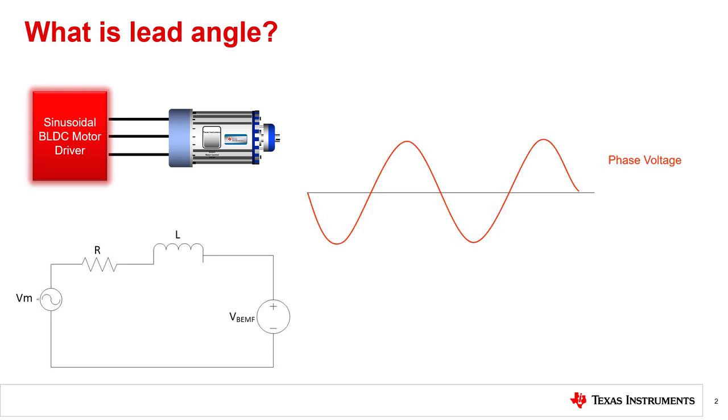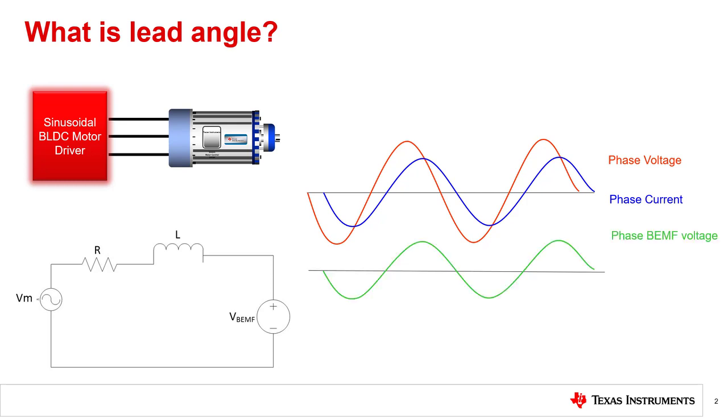Phase current of the motor lags the phase voltage because of the inductance of the motor. To achieve optimal efficiency, the phase voltage should be applied in advance compared to the back EMF voltage and must be adjusted to keep the back EMF voltage aligned with the phase current. This difference between the applied phase voltage and the back EMF voltage is known as lead angle.